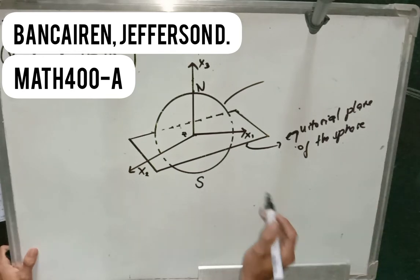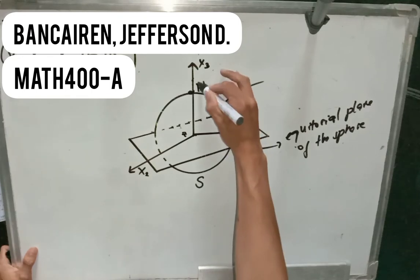So at the top of the sphere, we have one point which is called the North Pole. So here, we denote North Pole as capital letter N.